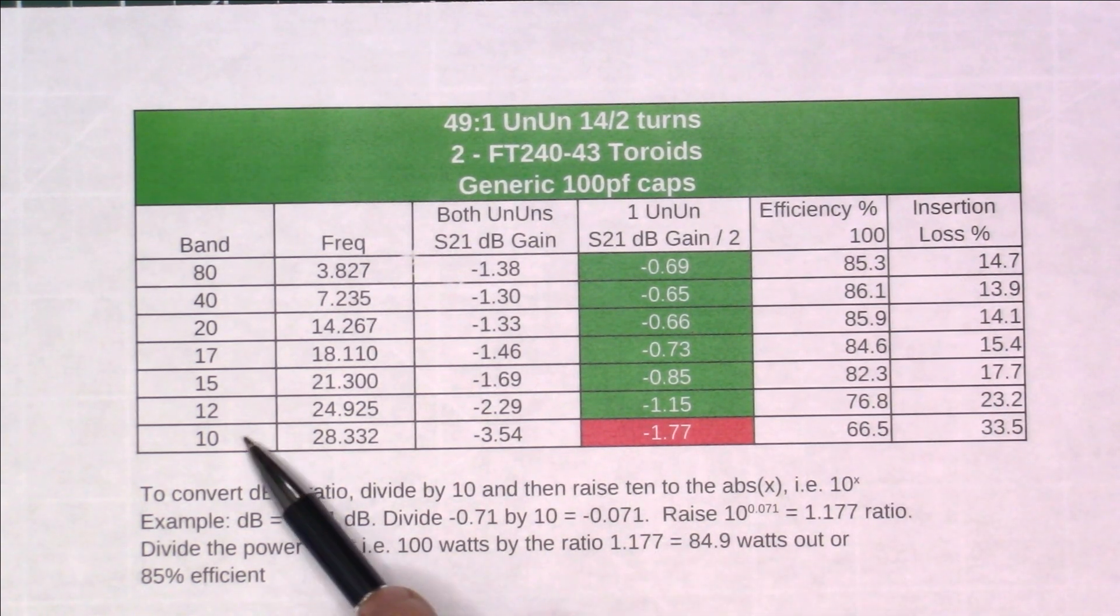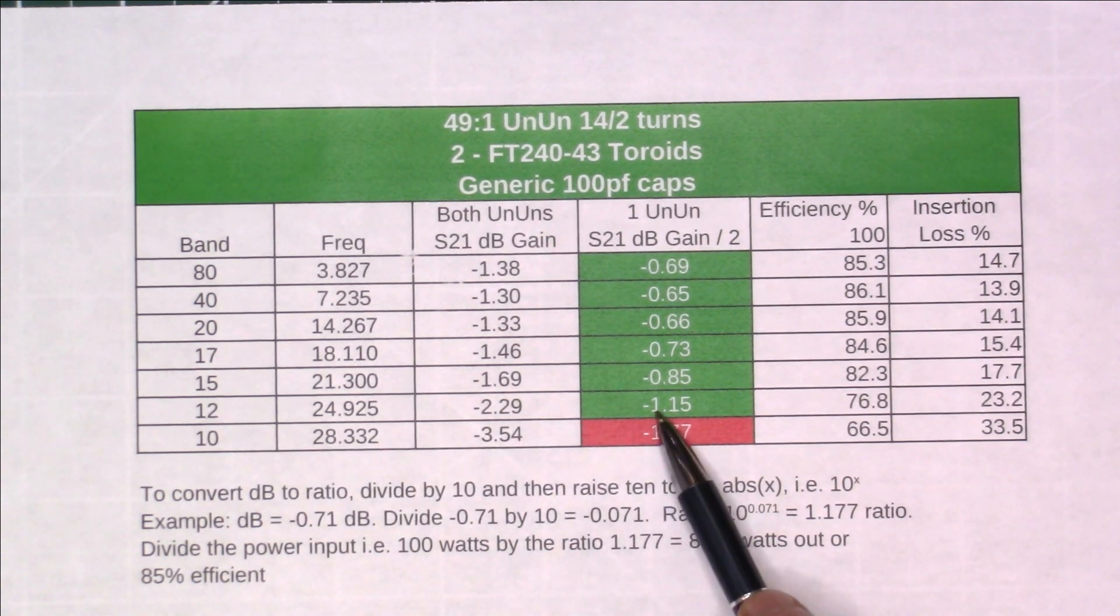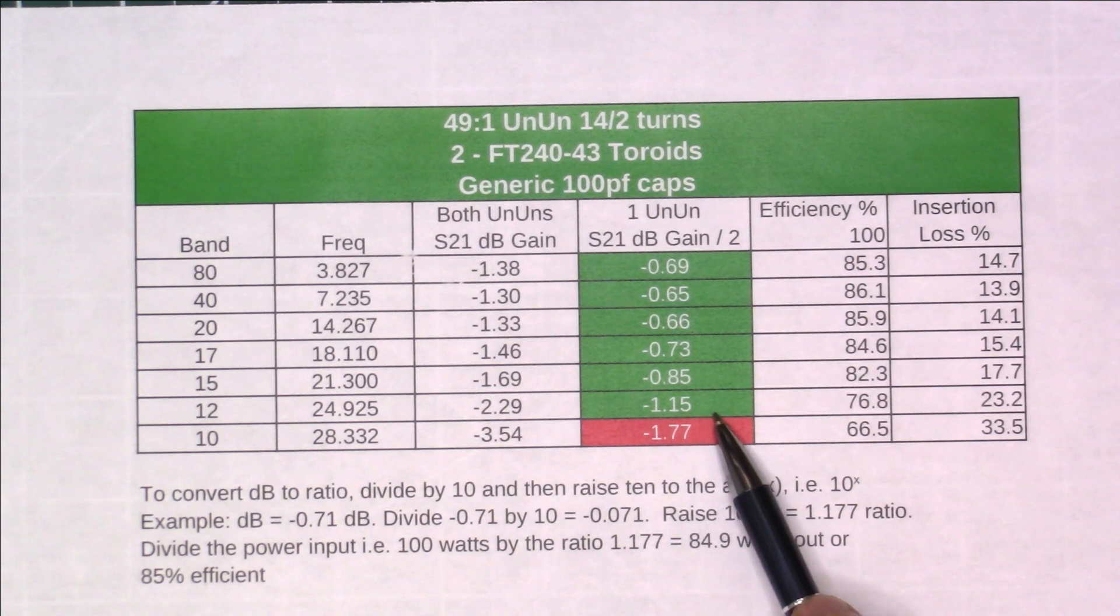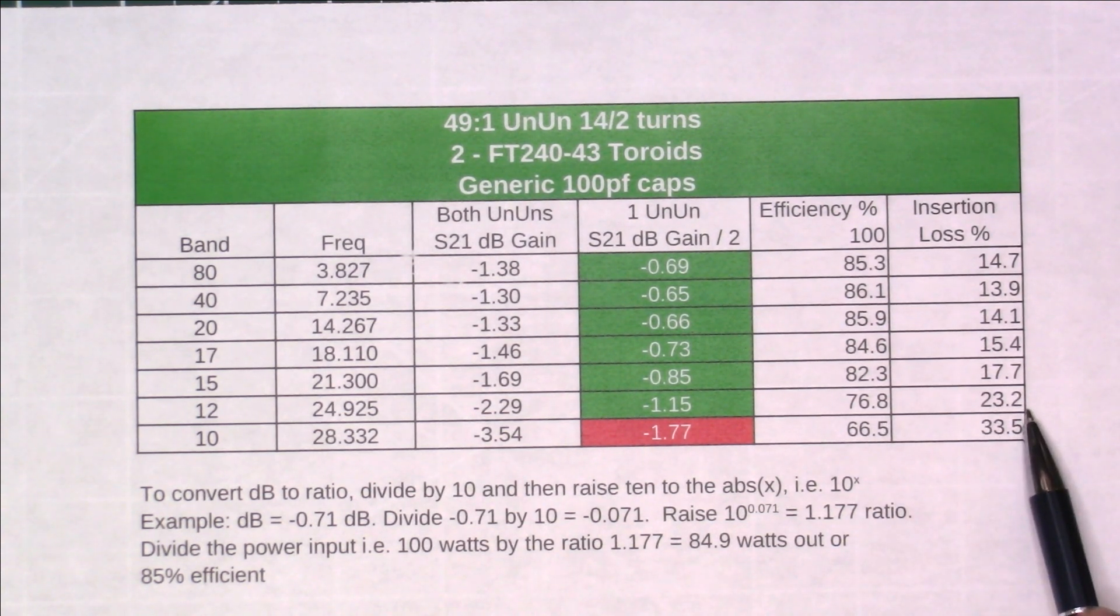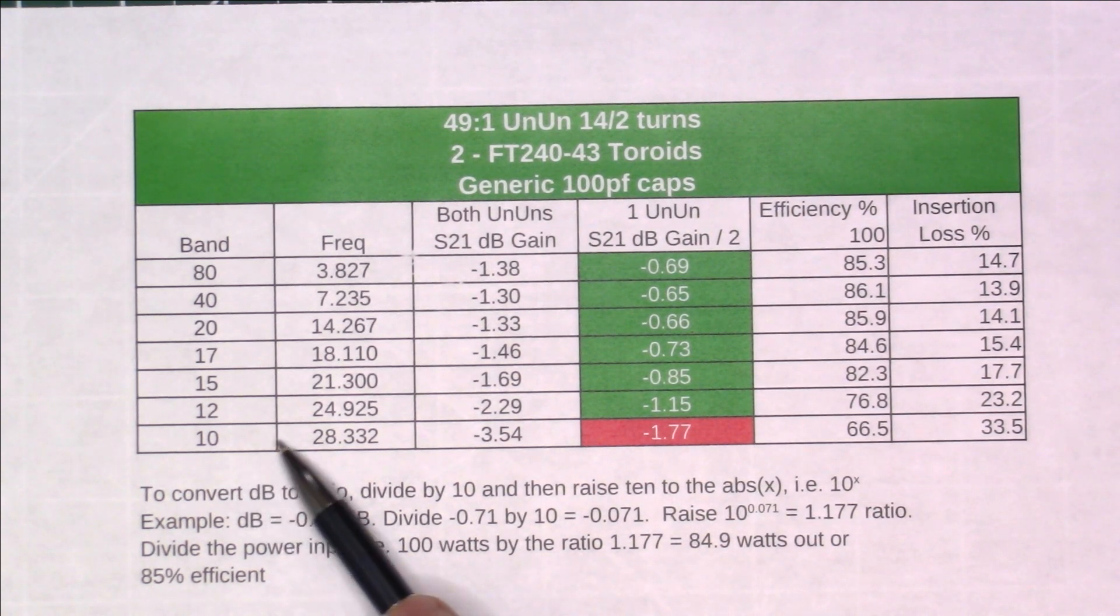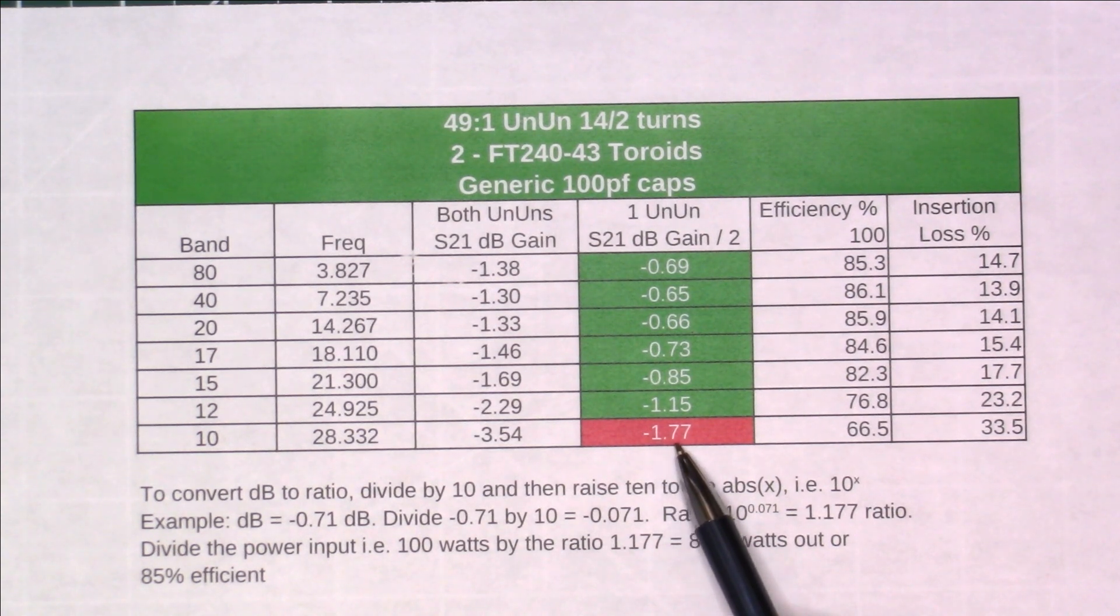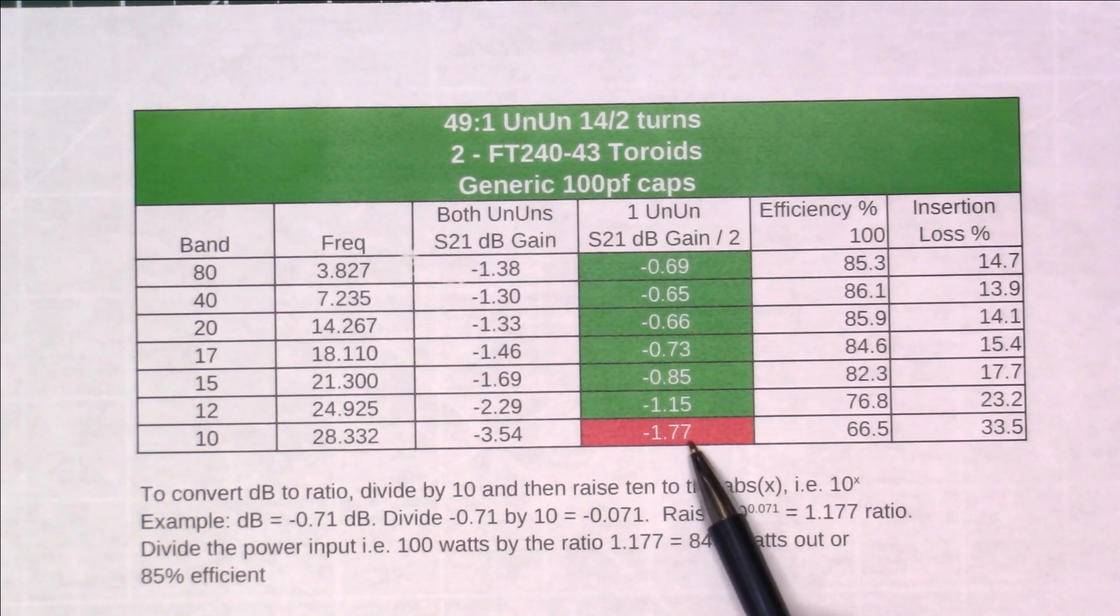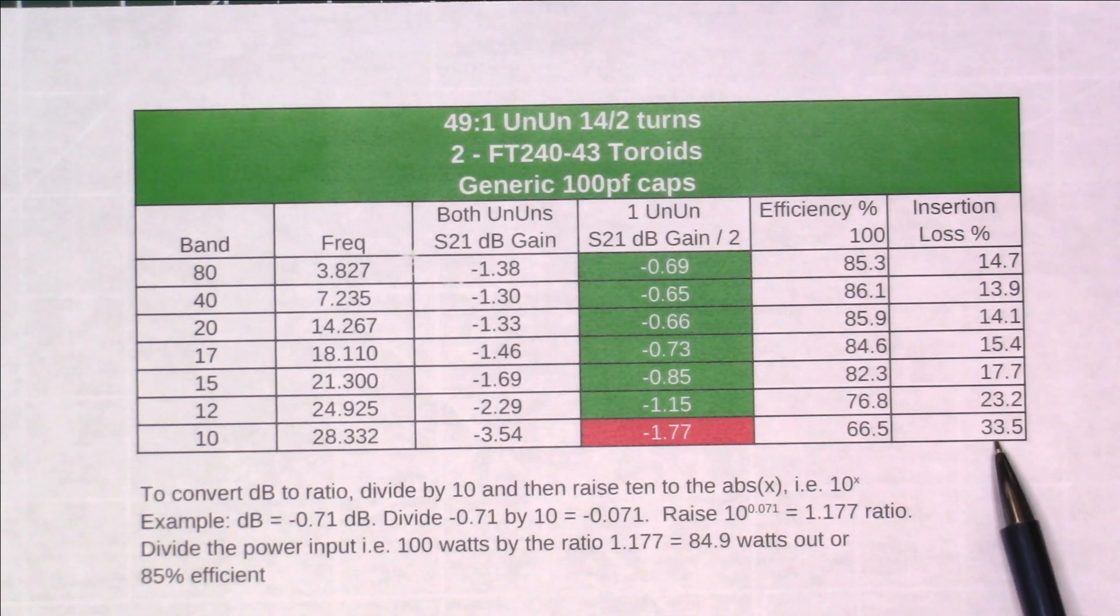On the 12 meter band we had a loss of 2.29 through both, or 1.15 through each for 76.8 or 77% efficiency, 23% loss. And then the 10 meter band is where it really took a hit at 28.332 megahertz. We had a loss of 3.54 through both, divide that by two, we had a loss of 1.77 dB. Basically, one-third of your power is going into heat. So you've got a 33% loss.